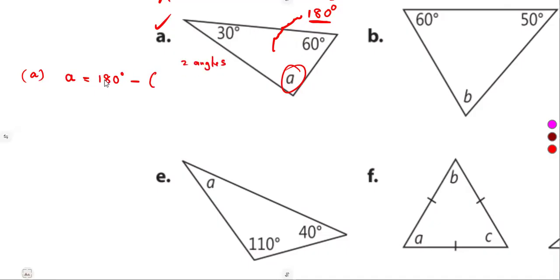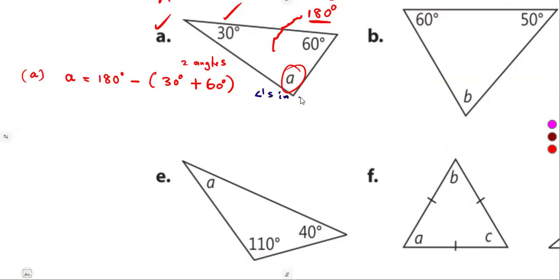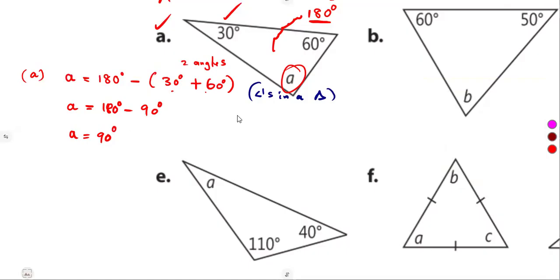We want to find the third angle, so from 180 degrees we remove the two known angles, which are 30 degrees and 60 degrees. Remember, angles in a triangle add up to 180 degrees. Using your calculator: 180 minus 90 degrees gives us 90 degrees.